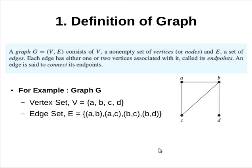We begin with the definition of a graph. A graph G consists of a non-empty set of vertices, denoted as capital V, and a set of edges as capital E. Each edge has either one or two vertices associated with it, called its endpoints.